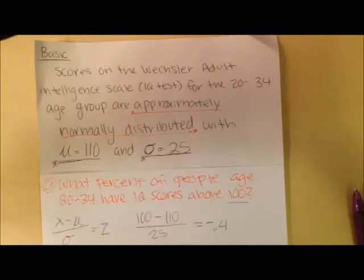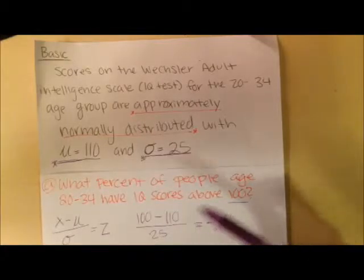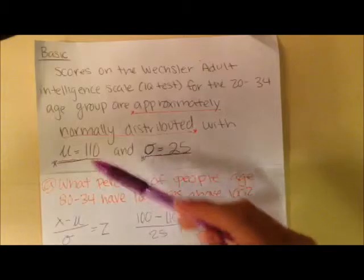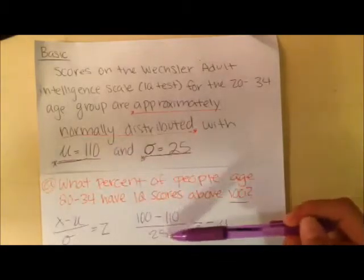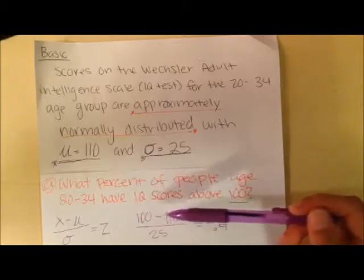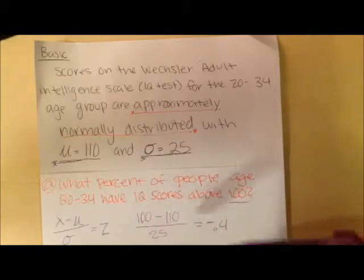So if we plug in what we know, our given value, or X, will be 100 minus our mean of 110 divided by standard deviation of 25. And if you plug this into your calculator, you should get negative 0.4.